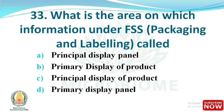Next question: what is the area on which information under FSS Packaging and Labeling Regulations is called? Options: (A) principal display panel, (B) primary display of product, (C) principal display of product, (D) primary display panel. The right answer is option A, principal display panel.